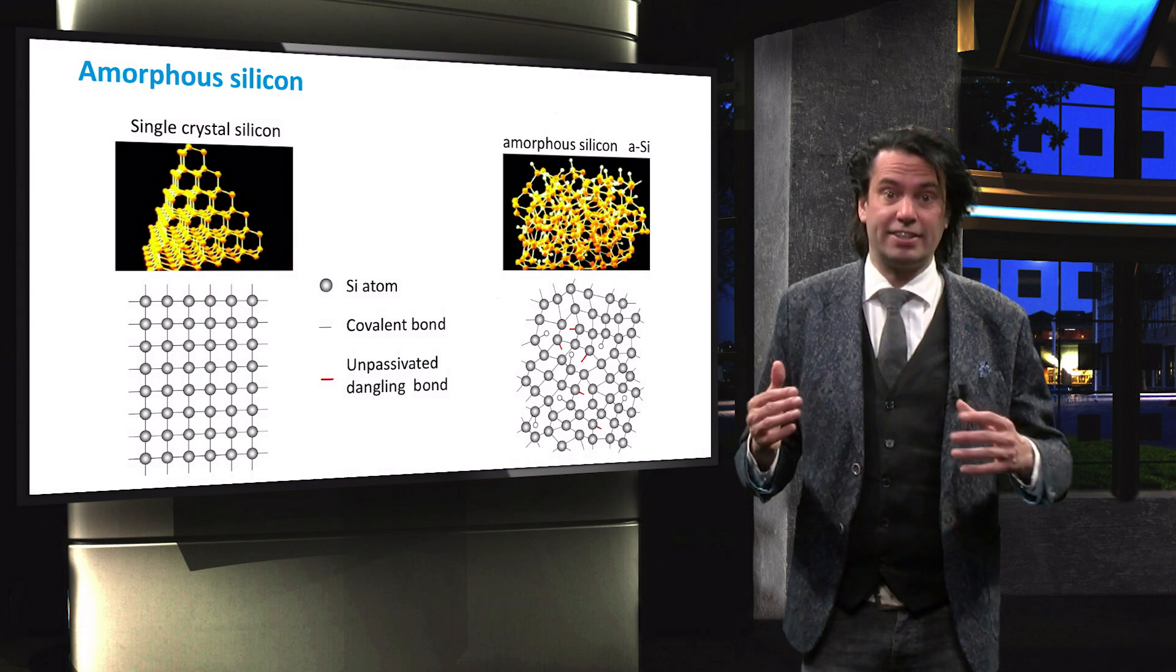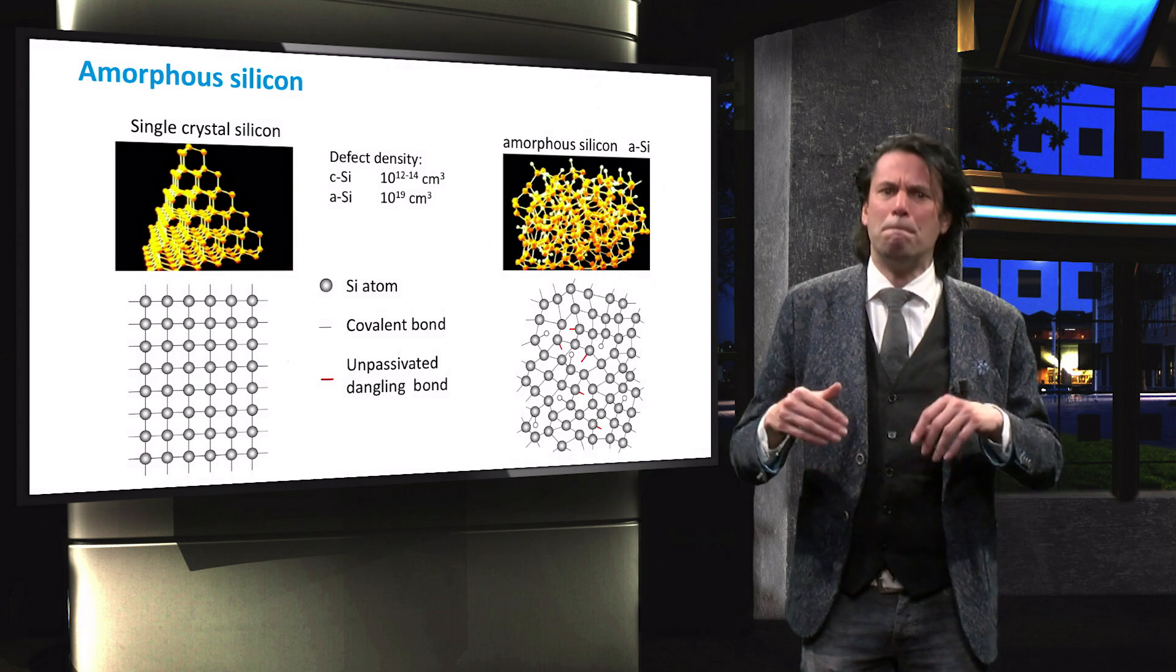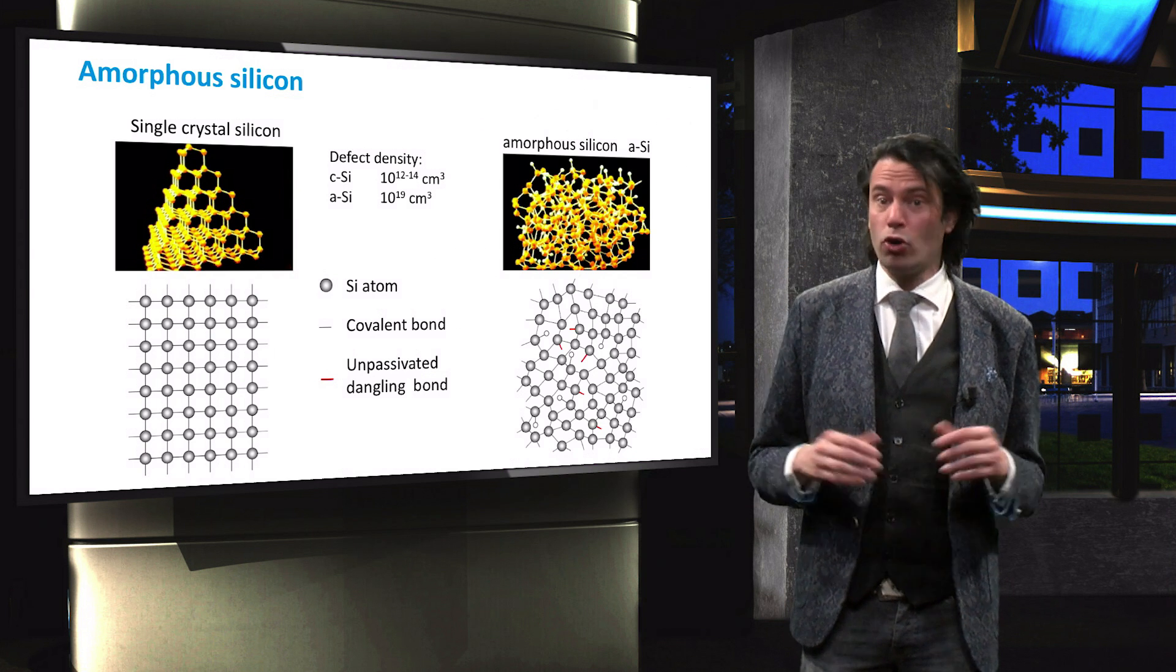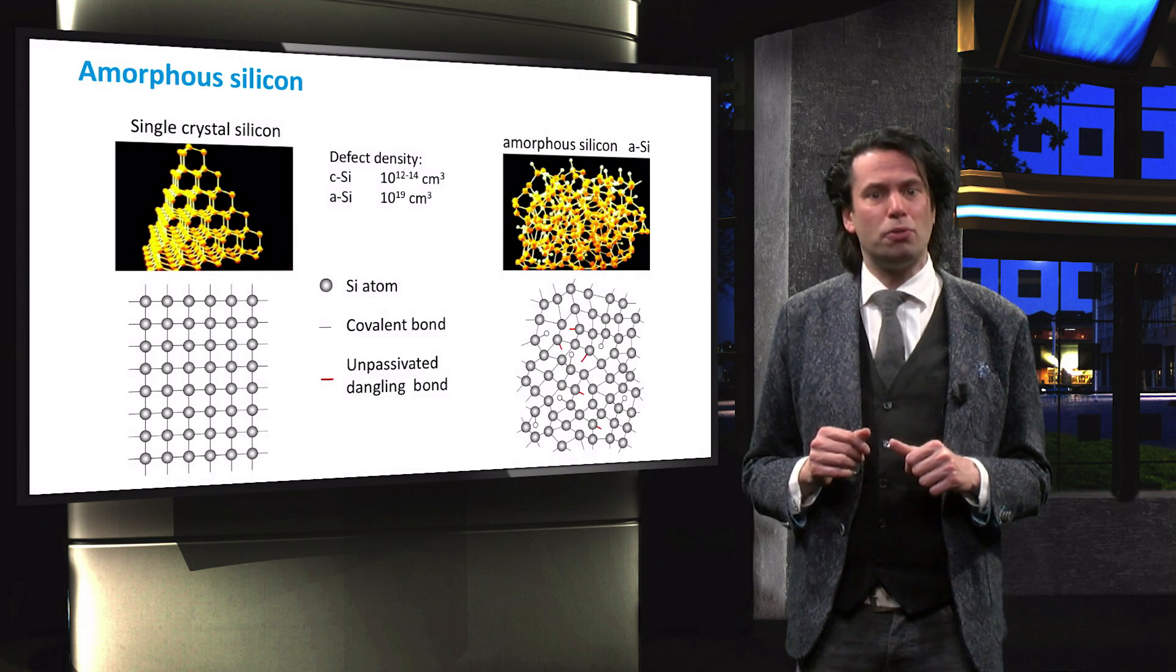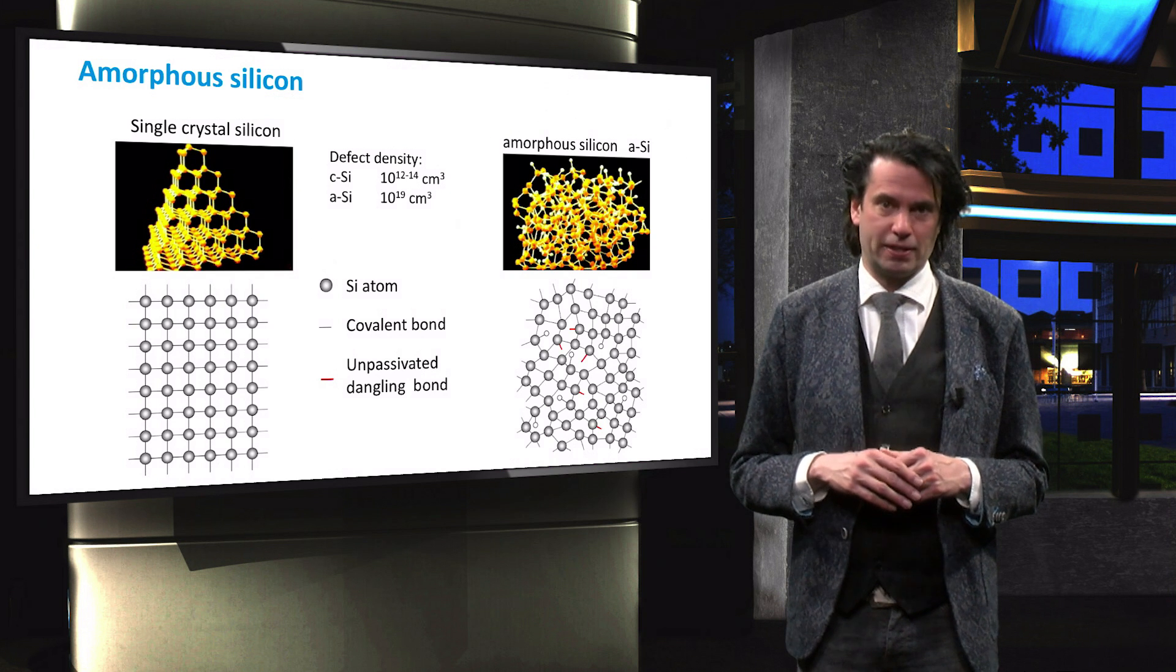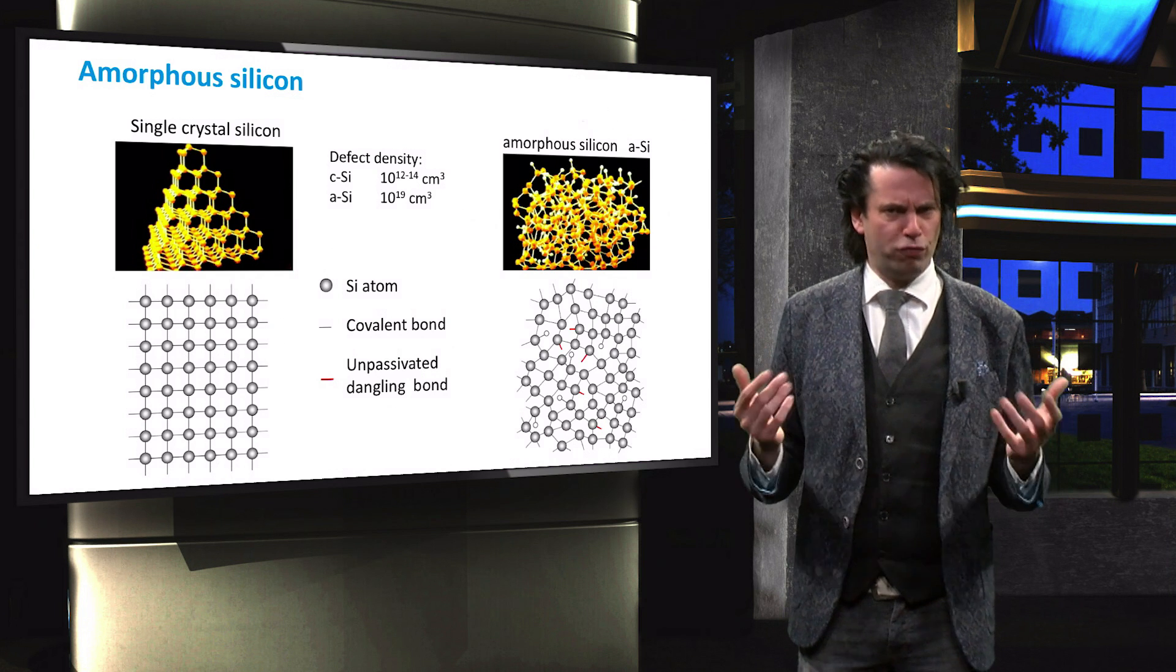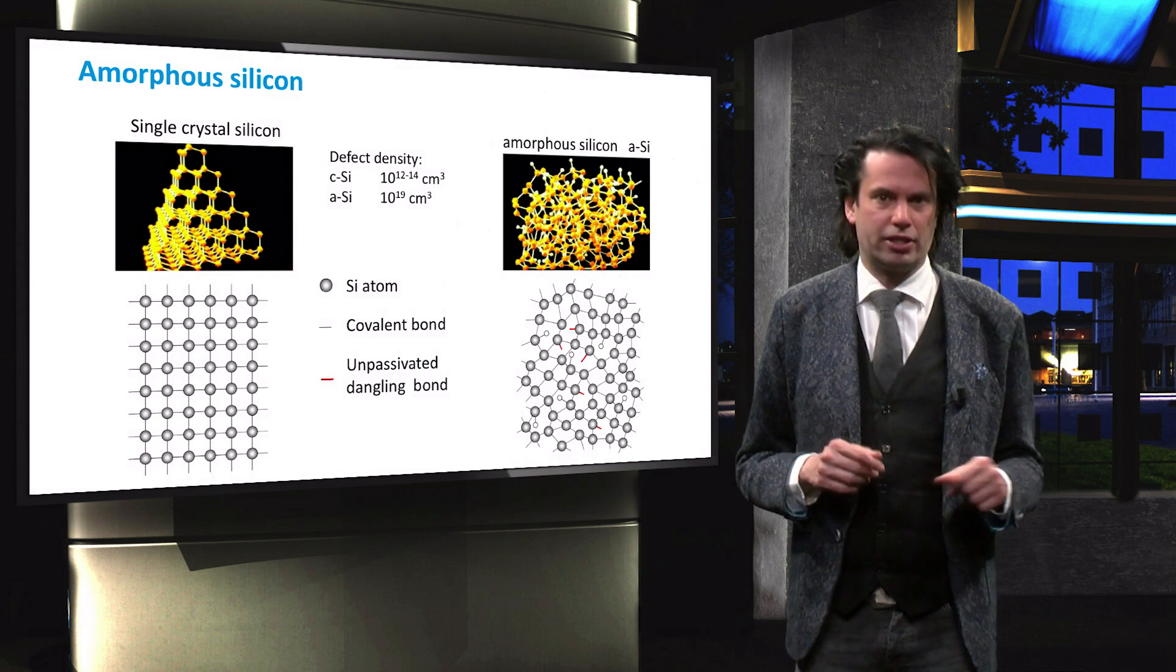The dangling bonds are in fact defects. Consequently, amorphous silicon has a much higher defect density of around 10 to the power 19th per cubic centimeter, compared to crystalline silicon, which has about 10 to the power 12 to 14 defects per cubic centimeter. The defects lead to fast recombination of photo-excited charge carriers and cause amorphous silicon to have poor conductivity in reference to crystalline silicon.